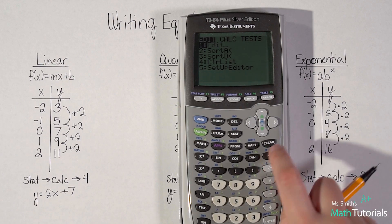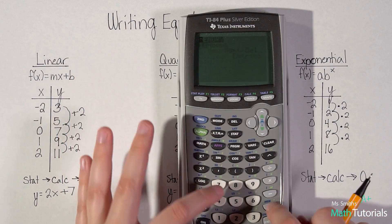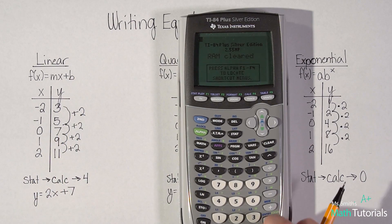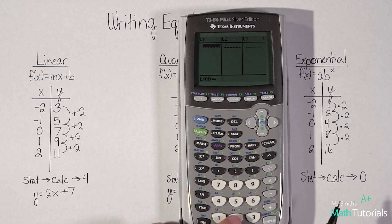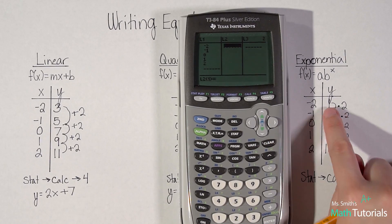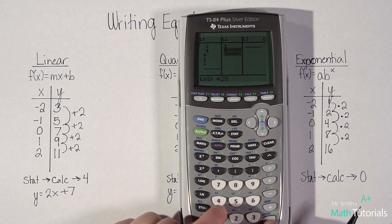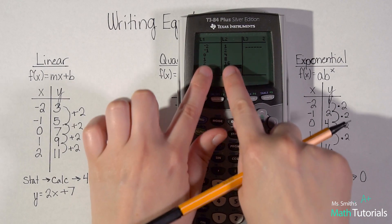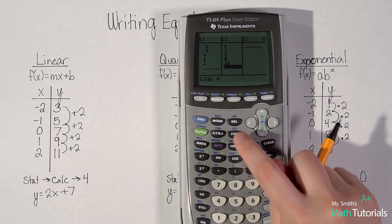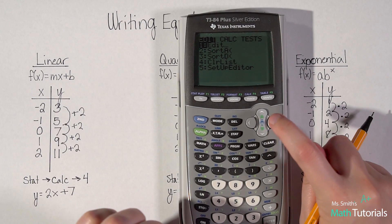Let's do stat. I'm going to clear my calculator again to get rid of those previous lists. Stat, edit, do all my x values, negative two, negative one, zero, one, two. My y values, one, two, four, eight, 16. Make sure you're even, make sure you didn't make any mistakes.